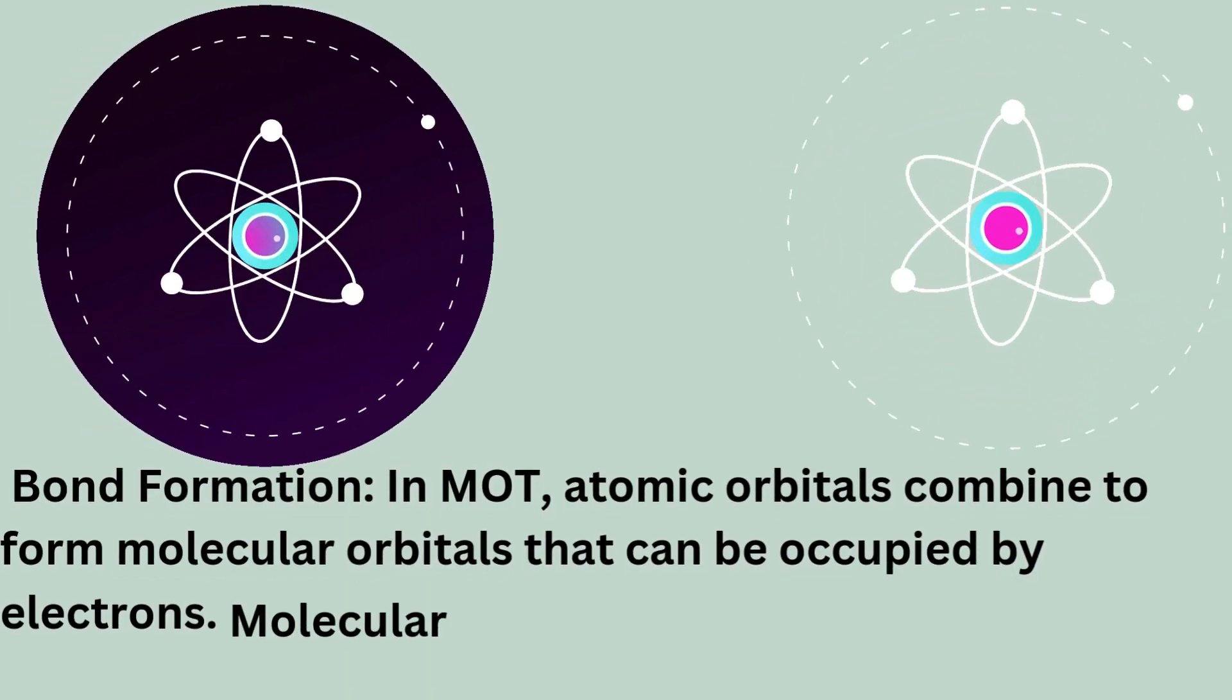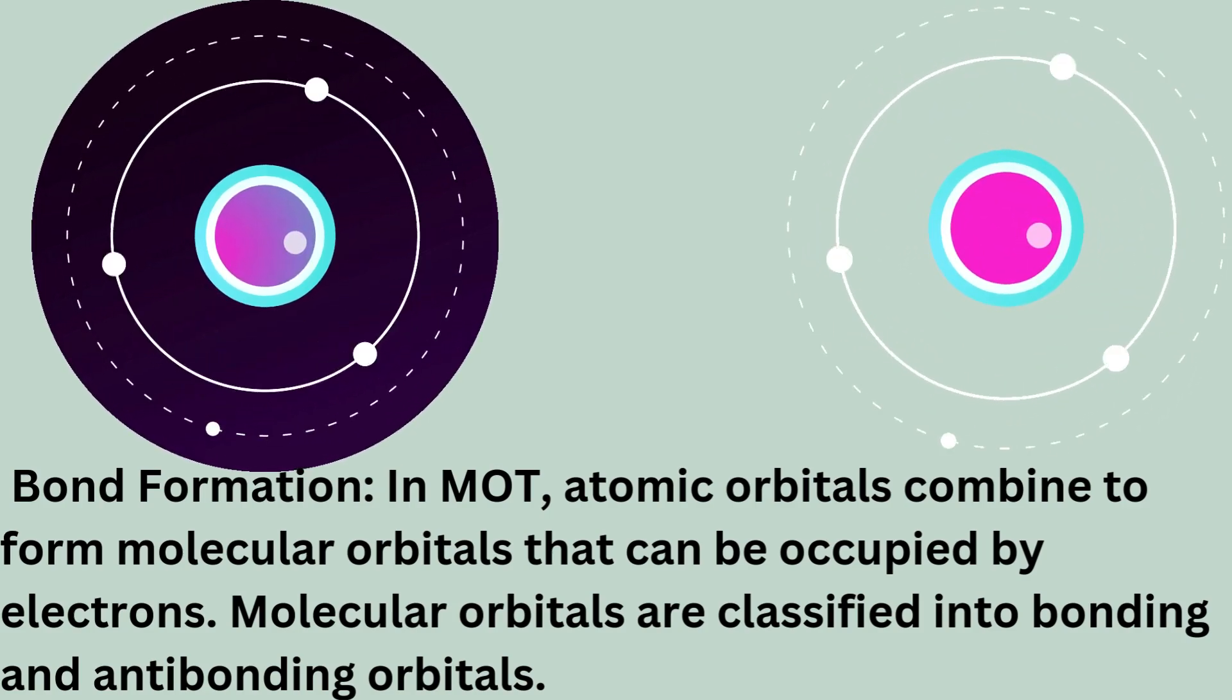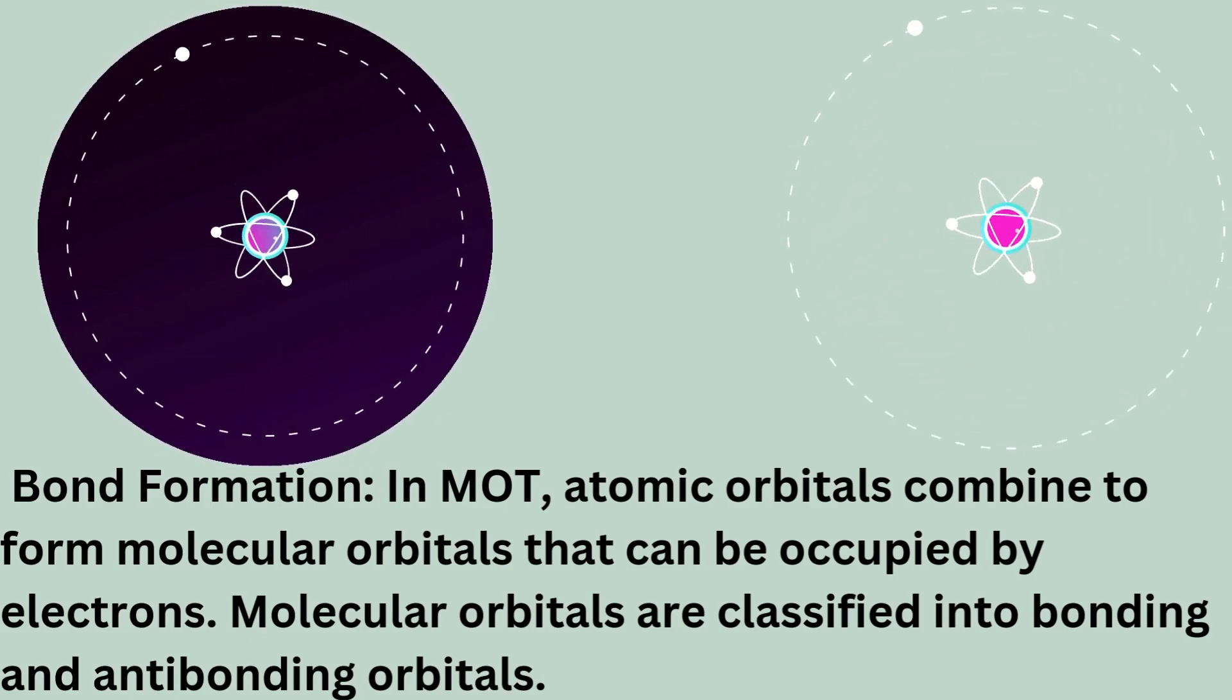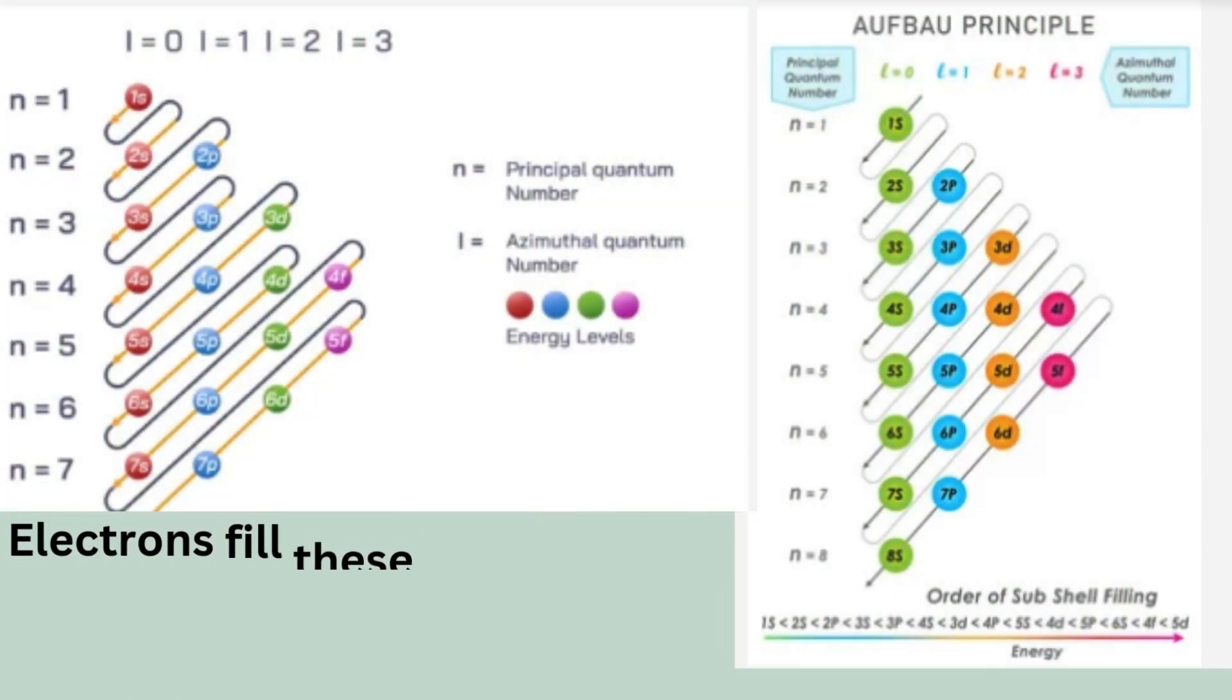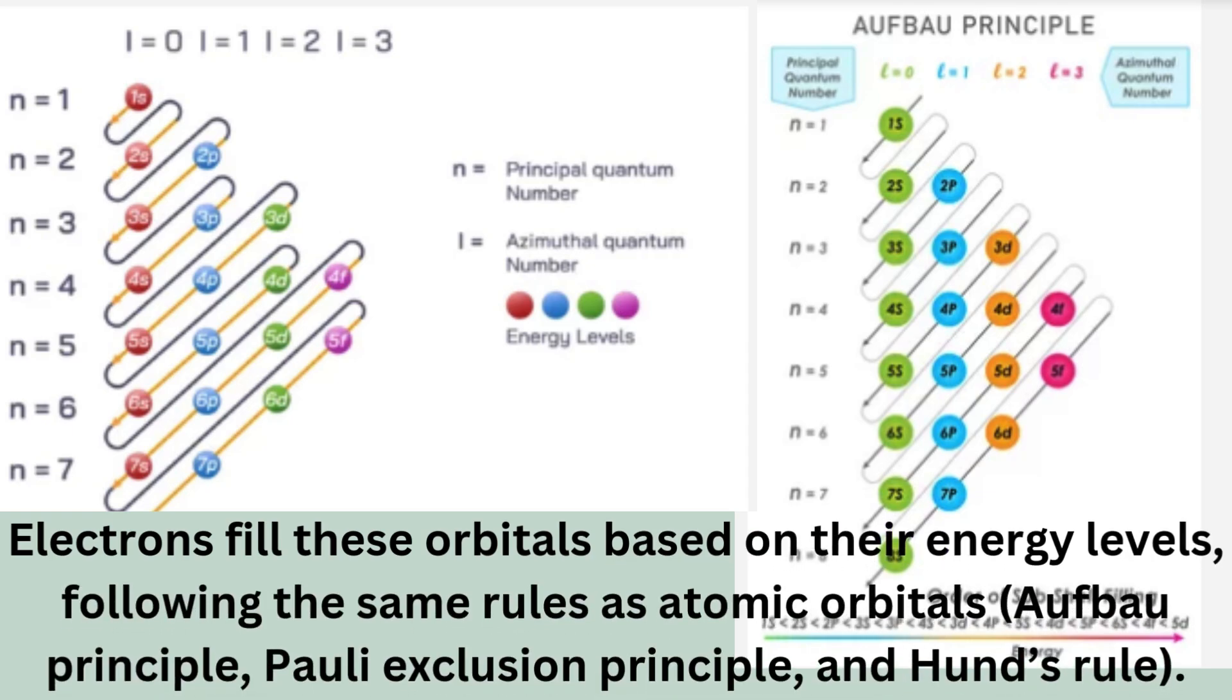Bond Formation: In MOT, atomic orbitals combine to form molecular orbitals that can be occupied by electrons. Molecular orbitals are classified into bonding and antibonding orbitals. Electrons fill these orbitals based on their energy levels, following the same rules as atomic orbitals: Aufbau principle, Pauli exclusion principle, and Hund's rule.